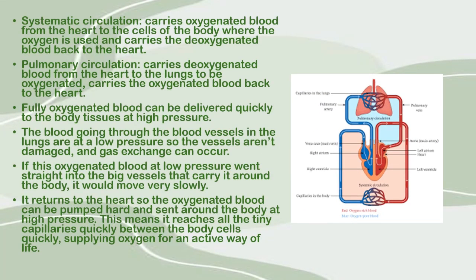In an organism with double circulation, there are two types: systemic circulation and pulmonary circulation. Systemic circulation carries oxygenated blood from the heart to the body cells where oxygen is used, and carries deoxygenated blood back to the heart. Pulmonary circulation carries deoxygenated blood from the heart to the lungs to be oxygenated, then carries oxygenated blood back to the heart. Blood going through the vessels in the lungs is at low pressure so the vessels aren't damaged and gas exchange can occur.